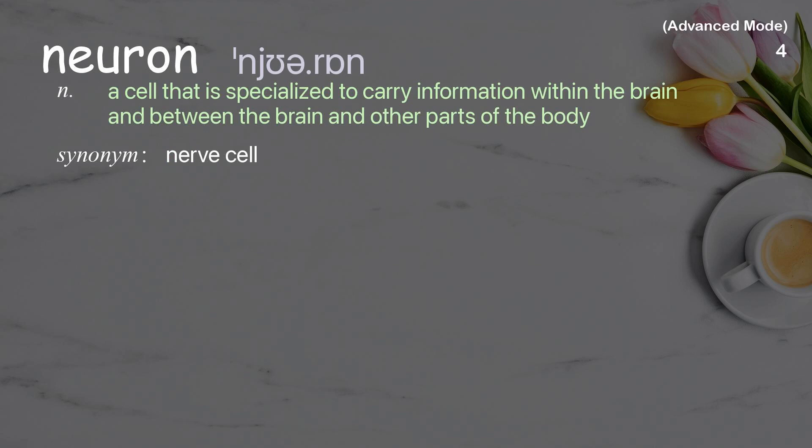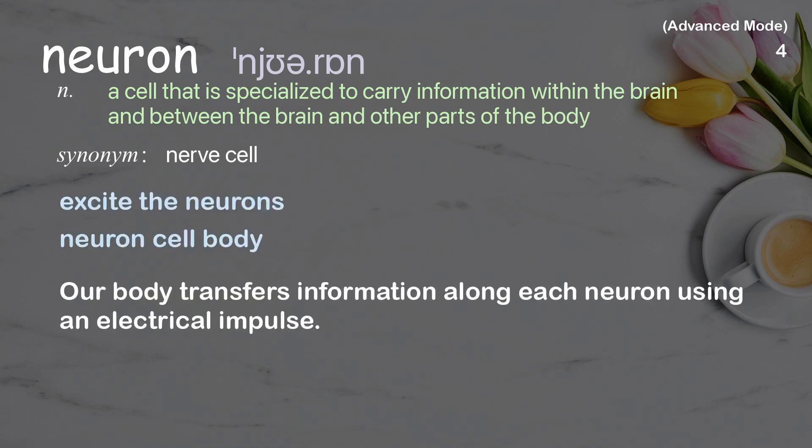Neuron. A cell that is specialized to carry information within the brain and between the brain and other parts of the body. Examples: excite the neurons, neuron cell body. Our body transfers information along each neuron using an electrical impulse.